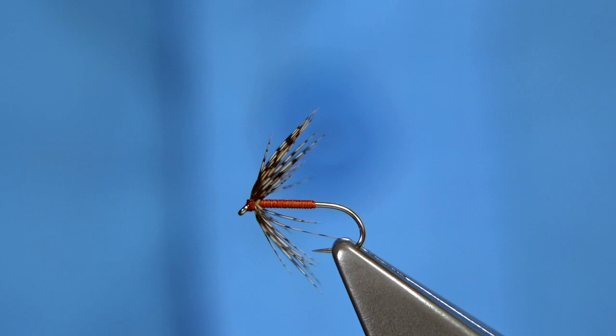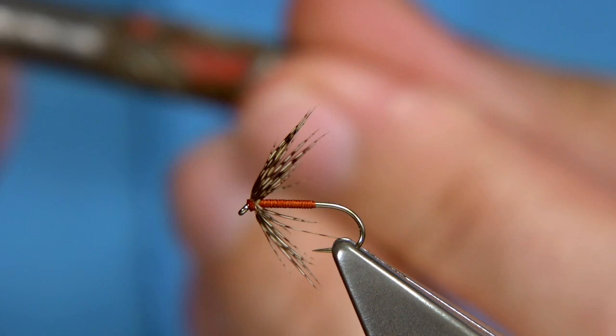Just going to clean the eye. See the eye's clean now. There we are. And that's the famous partridge and orange. This is a very simple fly to tie.